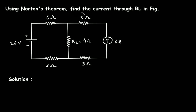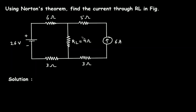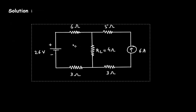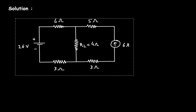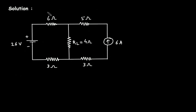Using Norton's theorem, find the current through RL in the figure. We have to find the current through this RL using Norton's theorem. Here we can see RL is equal to 4 ohm.